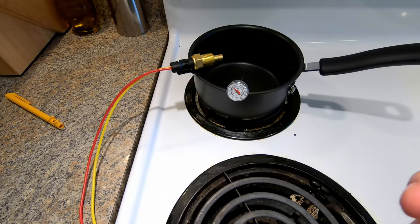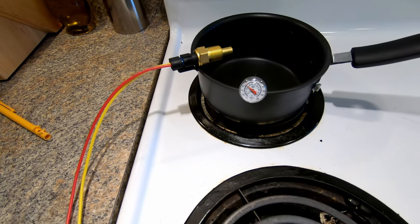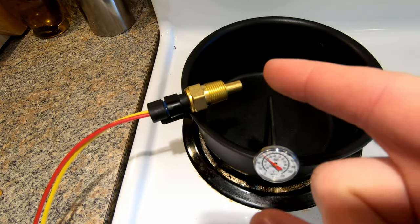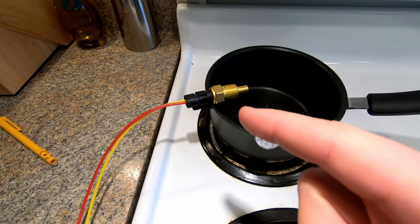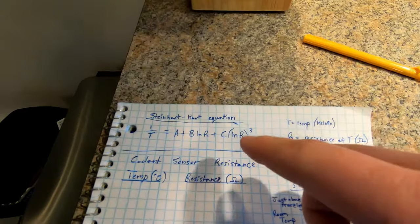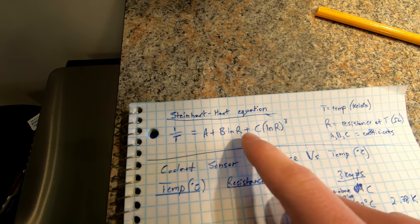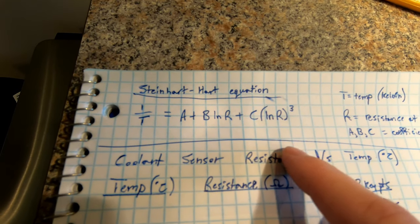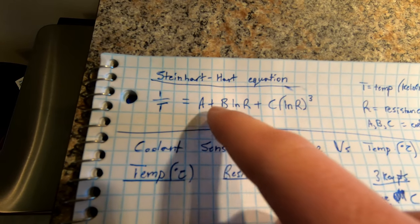You read the voltage and interpret it with an equation to get readable resistance and then temperature. Thermistor temperature-resistance curves are nonlinear, so you need to apply some sort of equation to that curve to reference certain values at certain temperatures. There's an equation called the Steinhart-Hart equation that you can use to reference that curve of temperature and resistance values for the sensor.